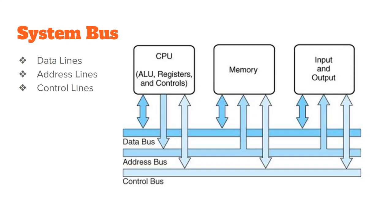The control bus manages timing and coordination. For example, when you are inputting information, the system also needs the monitor (output device) to be working simultaneously. The control bus determines at what time input should be given and when output should be produced — it controls all peripherals attached to the CPU. These are the three system buses and how they work.